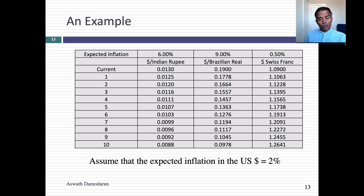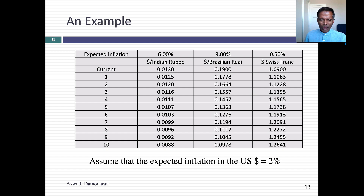In this table, I've taken three currencies against the dollar: the Indian rupee, the Brazilian real, and the Swiss franc. I've given the rupee a 6% inflation rate, the real a 5% inflation rate, and the Swiss franc a 0.5% inflation rate, and assumed 2% inflation in US dollars. I forecast exchange rates for the next year and the next 10 years in each currency. The Indian rupee depreciates roughly 4% a year (6% minus 2%). The Brazilian real depreciates about 3% a year (5% minus 2%). The Swiss franc appreciates about 1.5% a year.